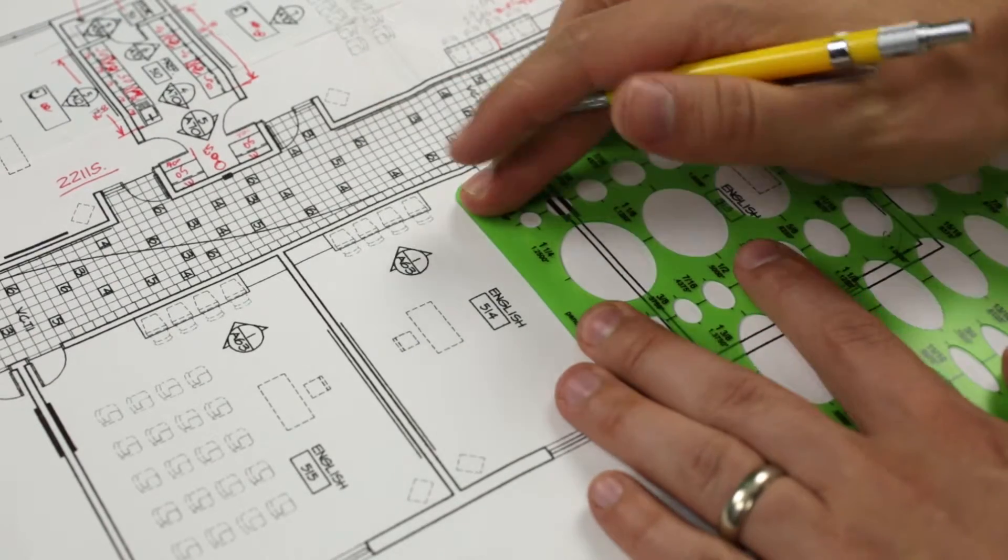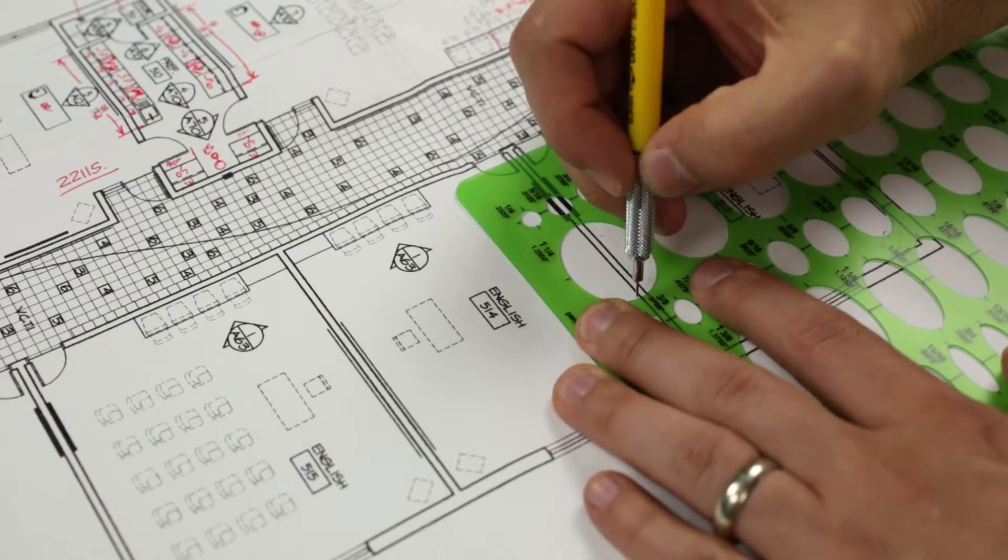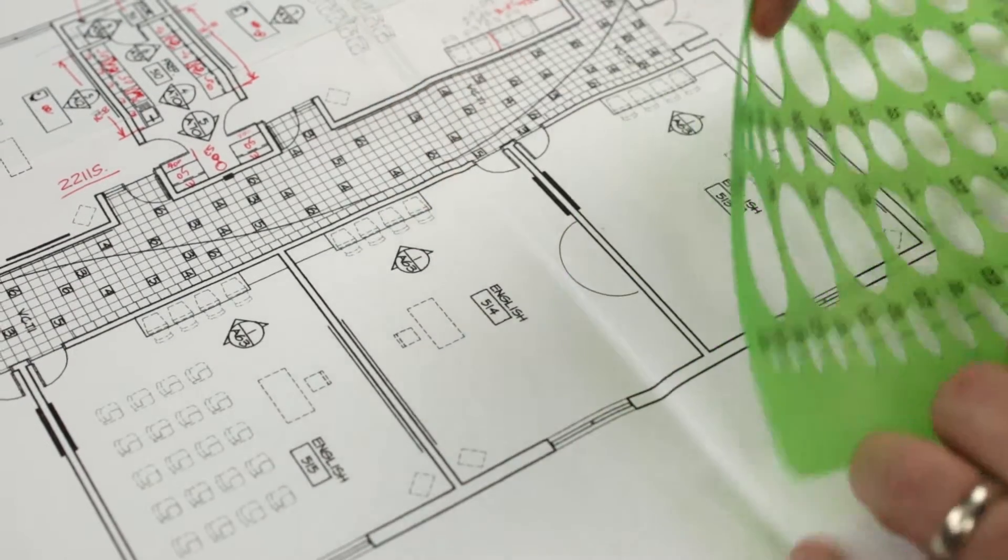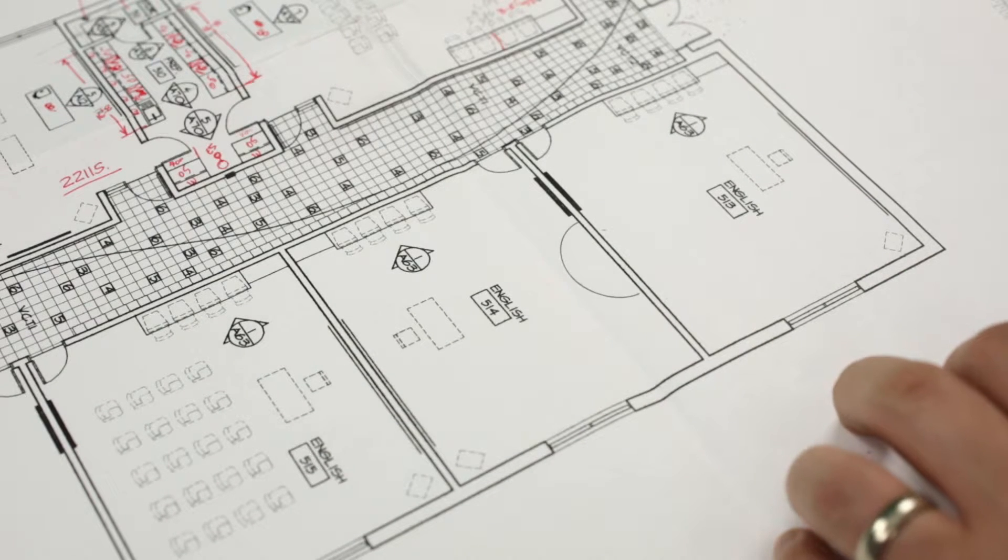A few tips on using your template. Number 1. Always press your template firmly against your work surface when drawing. When removing your template, pick it straight up off the surface so that you don't smudge the line.